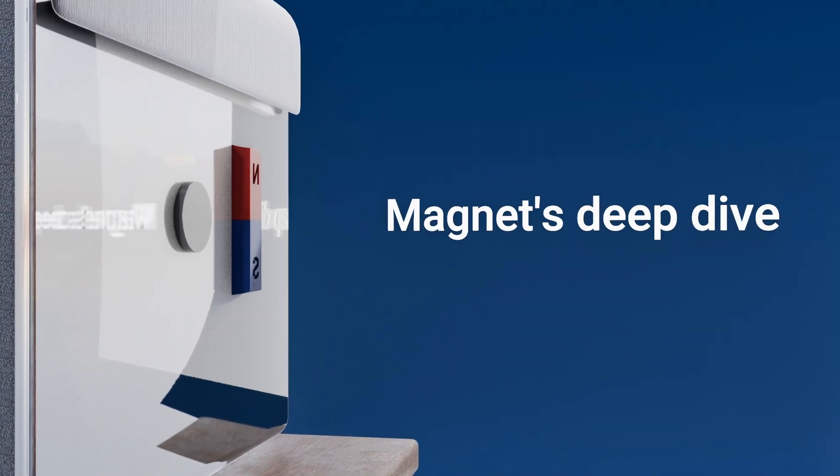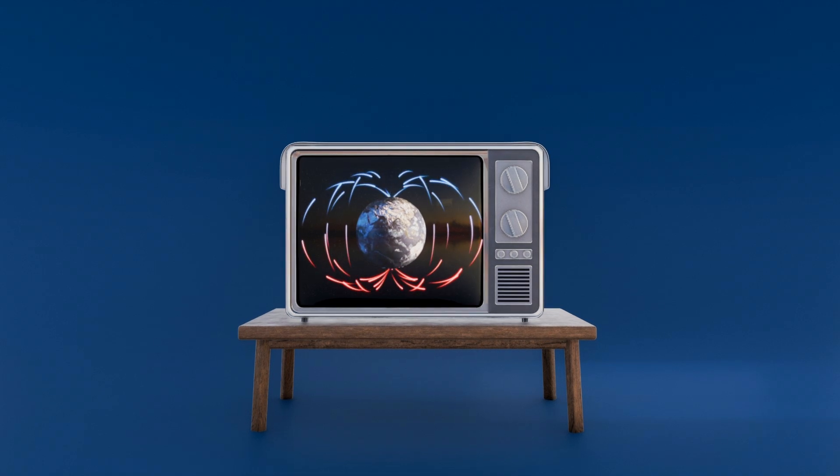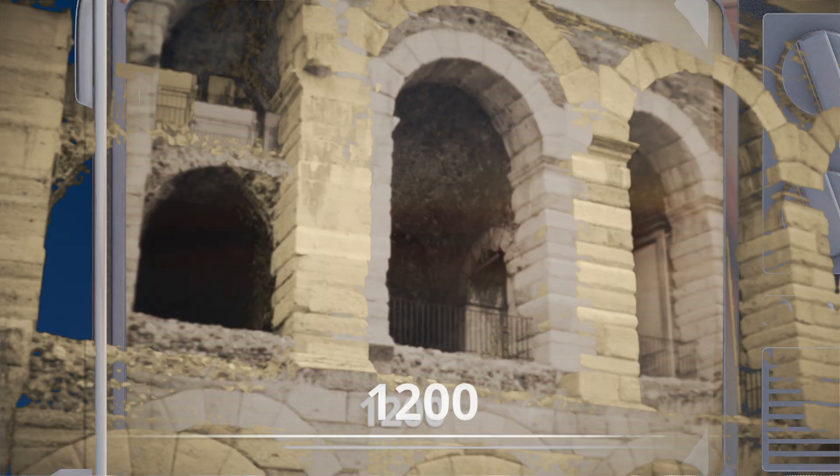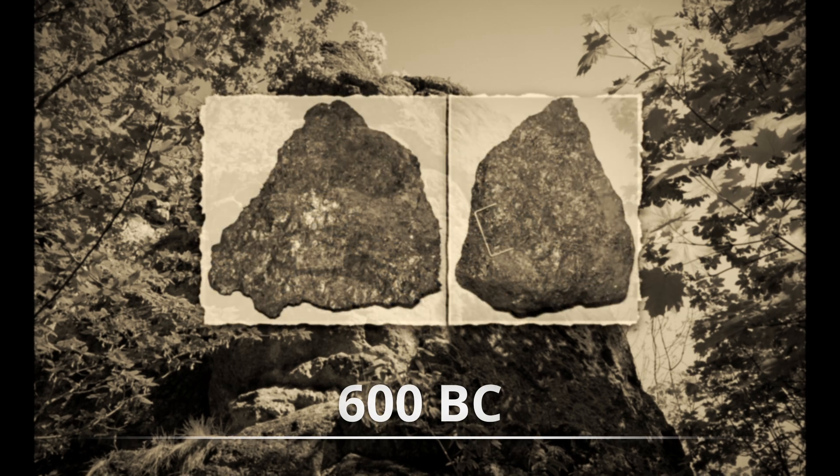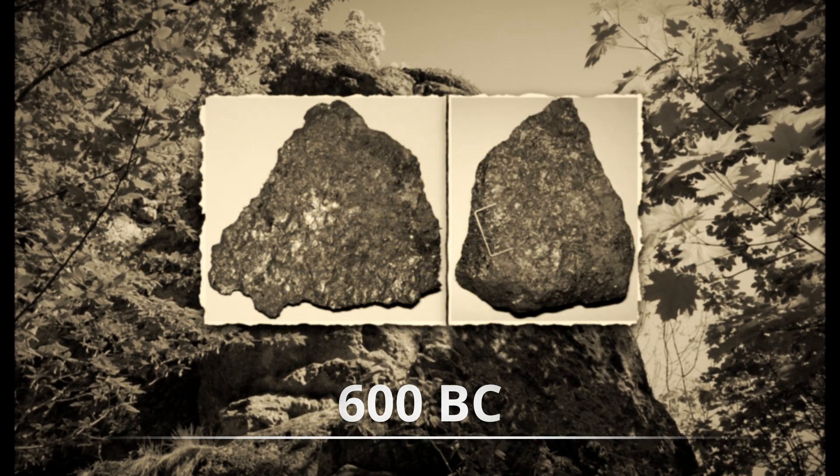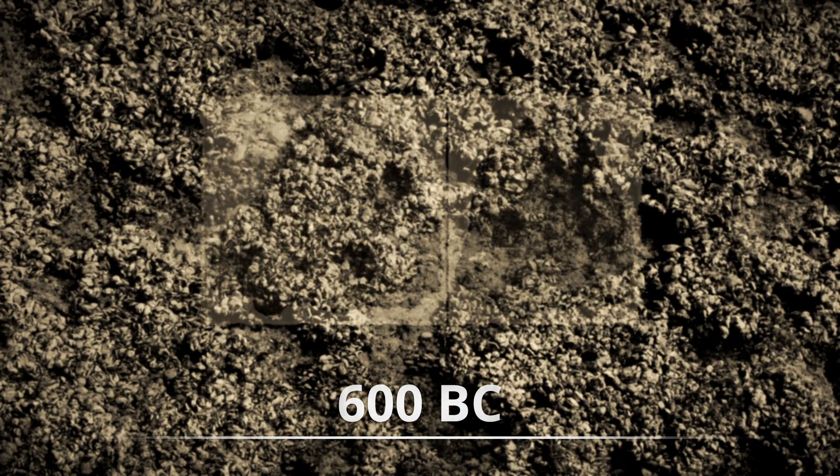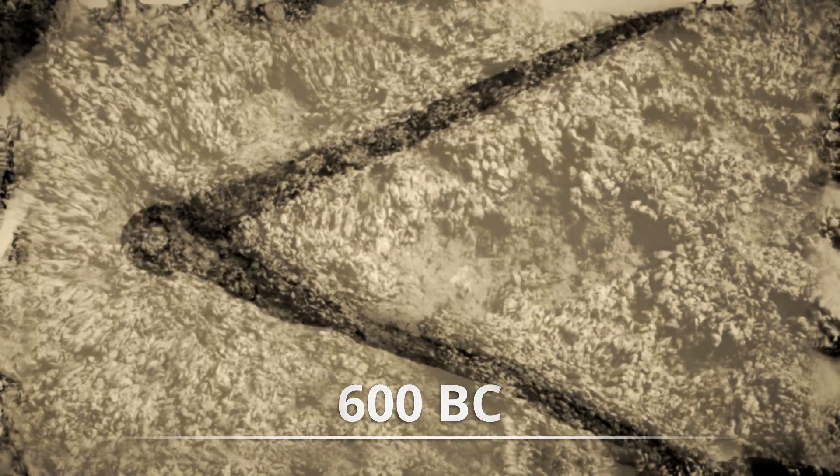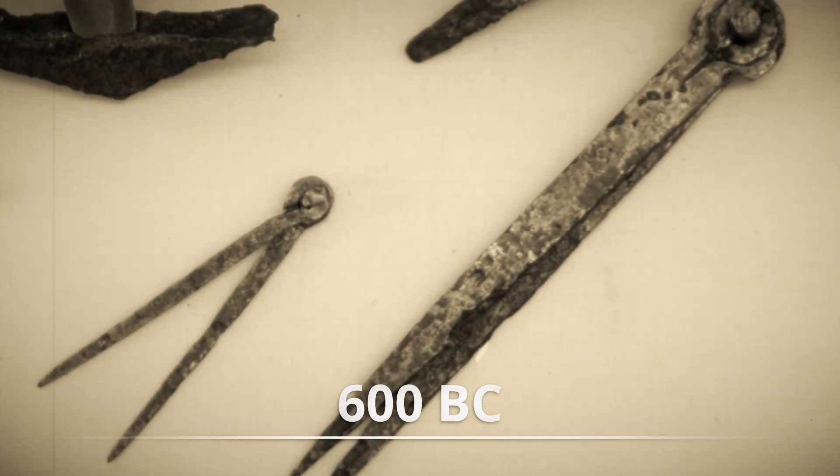Let's start with a little history. The story of magnets dates back thousands of years to ancient Greece, where naturally magnetized rocks fascinated early scientists. These rocks could mysteriously attract iron, leading to the first compasses that revolutionized navigation.